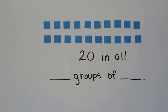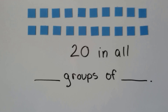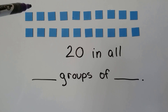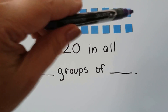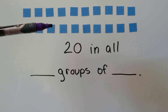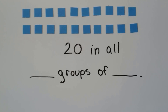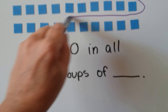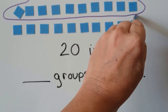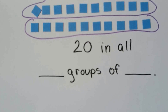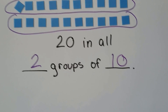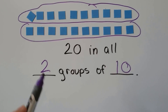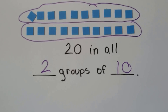Now look at this one. It says there's twenty in all. How can we split this up? We count and there's ten and ten — that's twenty. So we could split this into two groups: a group of ten and a group of ten. So we could have two groups of ten. Twenty divided by two will equal ten in each group.